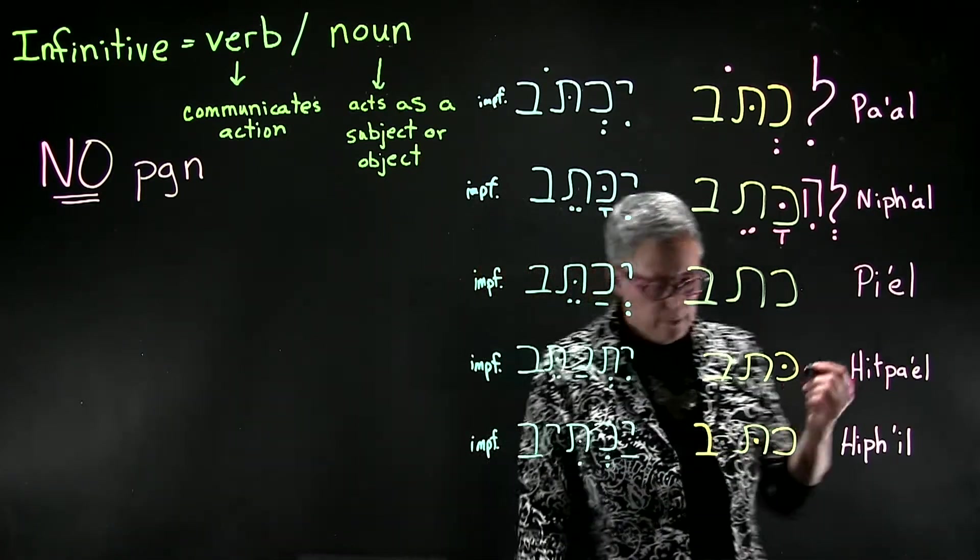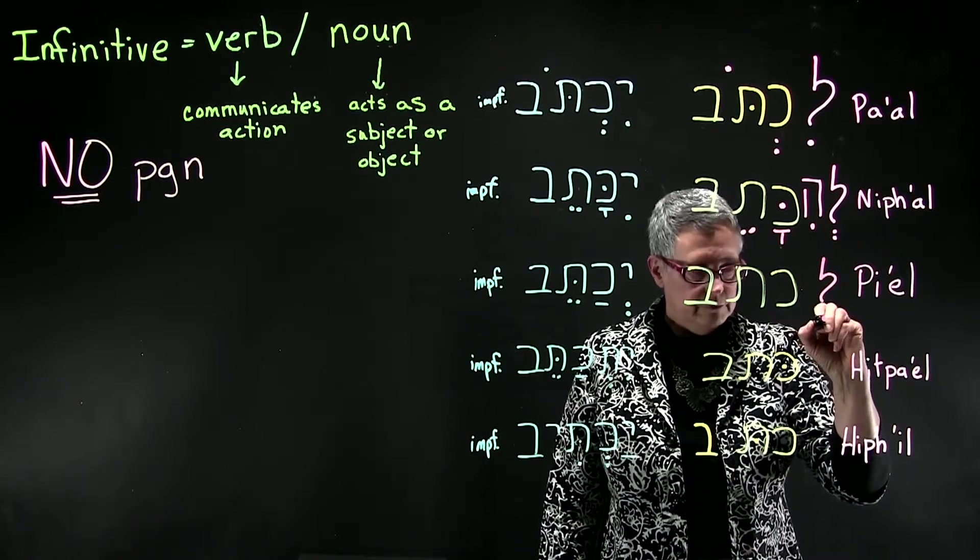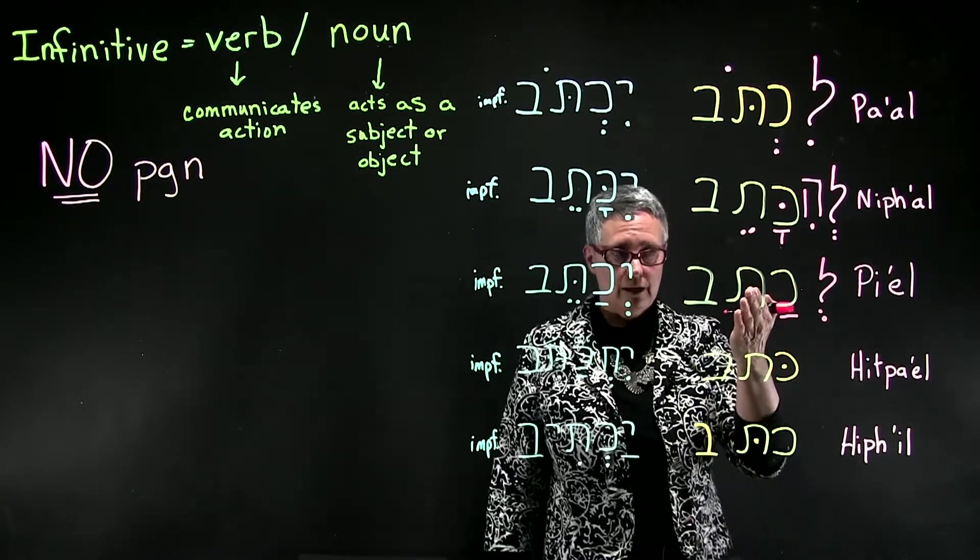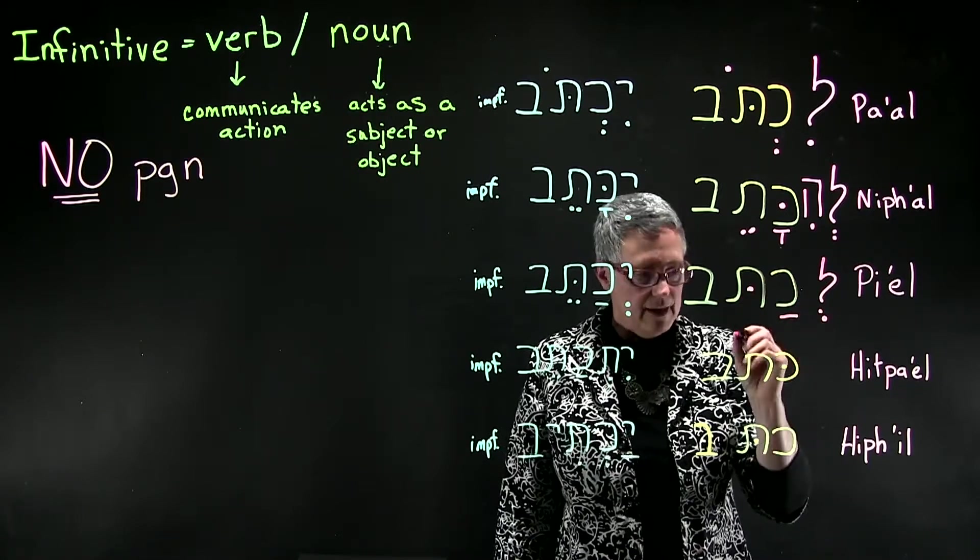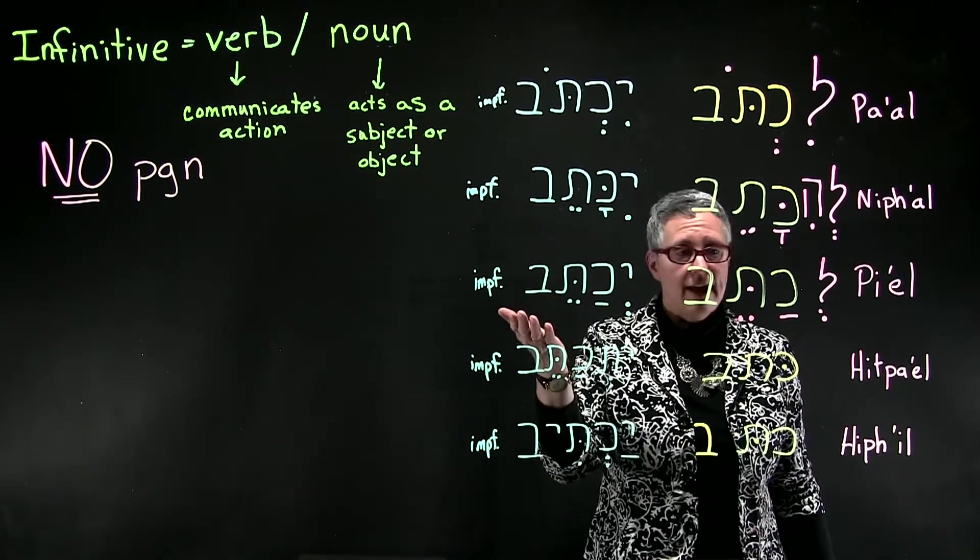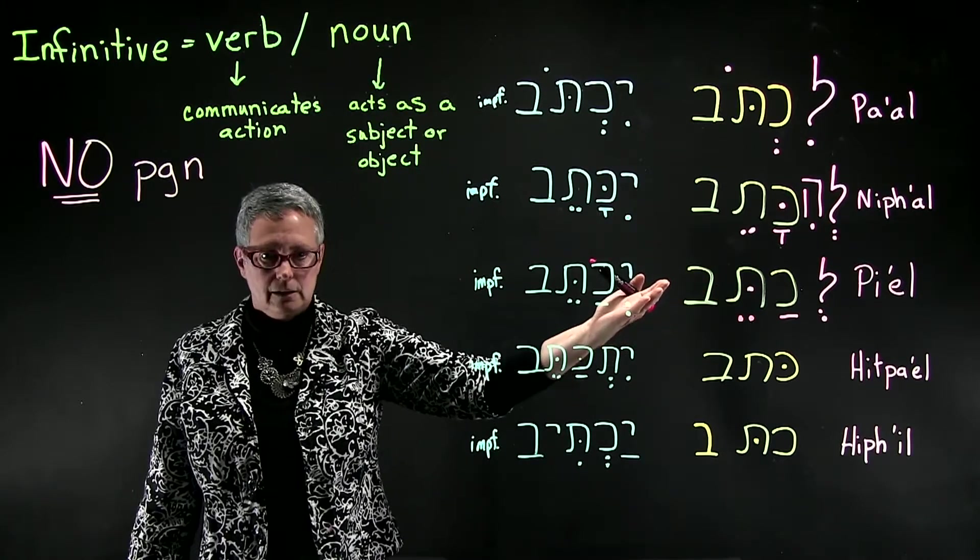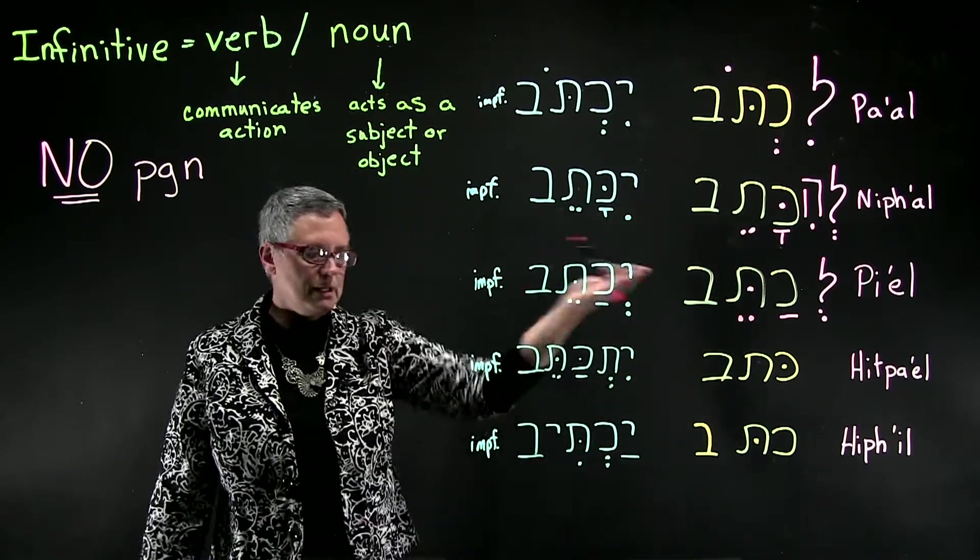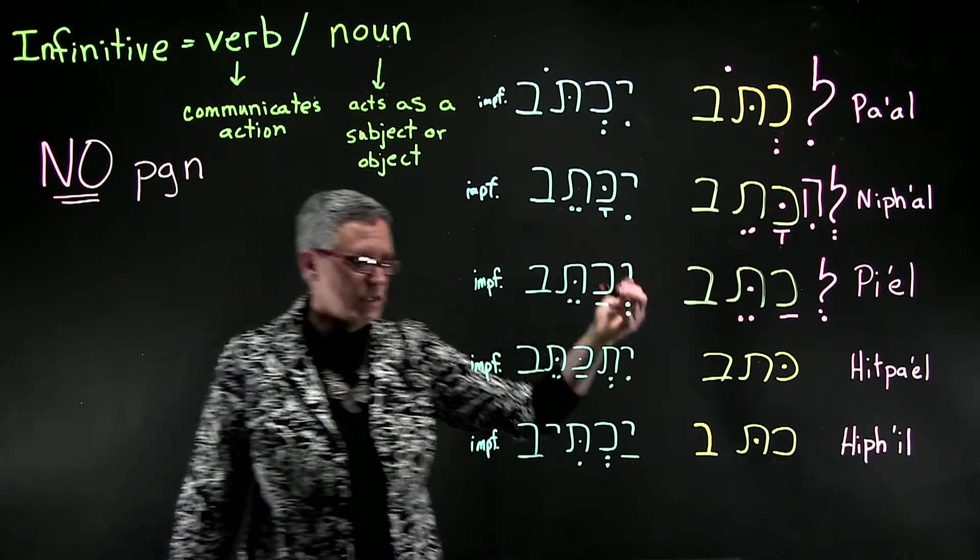The pi'el infinitive—we'll put our preposition on here again—and we have then the dagesh in the middle root letter because it's a pi'el form. We still get to see that, and then the vowel pointings the same as the imperfect again. So likatel. Yikatel for the imperfect, likatel for the pi'el. You can see how similar they are, but how it's easy to distinguish because you get that preposition at the beginning.